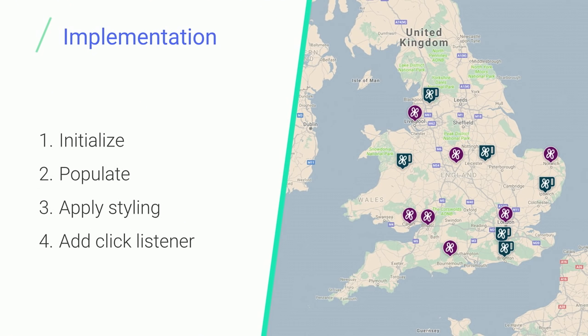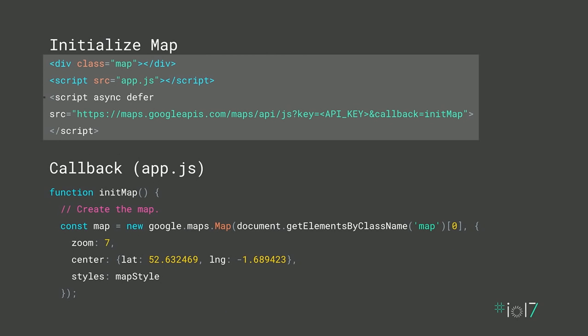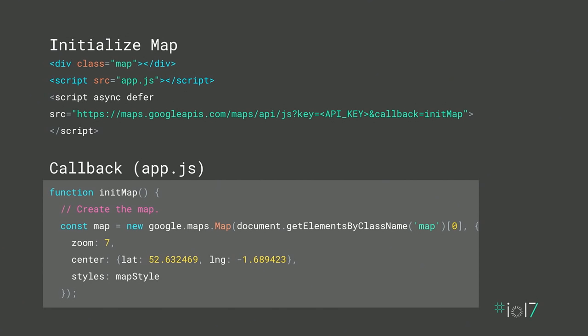The implementation is very simple. We initialize the map, put all our data on it and style it, then add a click listener so that when users click on a marker, we populate it with the relevant information. For those familiar with the JavaScript Maps API, you'll recognize adding a div for the map and an asynchronous script to load the Maps API. We substitute the API key, lock it to our domain, and use the callback parameter — when the map loads, it calls back our init function, where we set the zoom level, latitude, longitude, and apply our style.